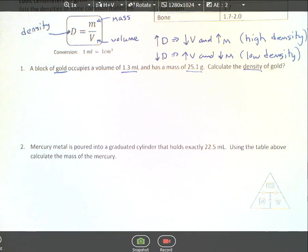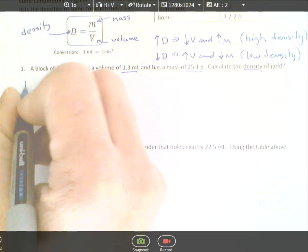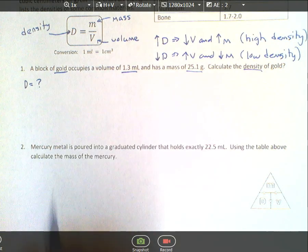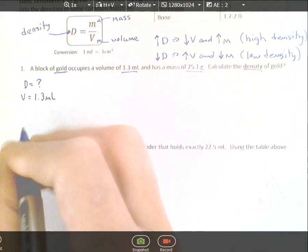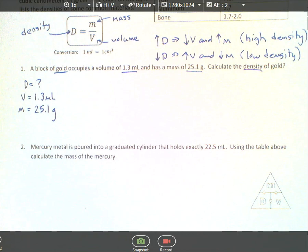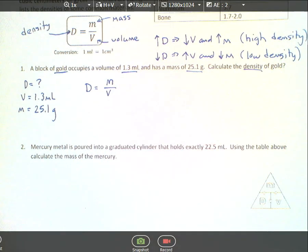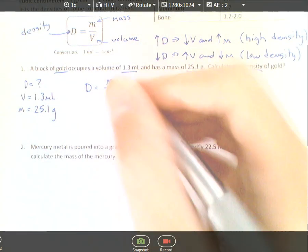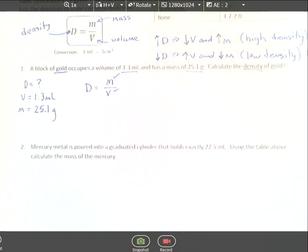Write out the density formula. You're looking for the density of gold, so we don't know it. The volume is 1.3 milliliters, and the mass is 25.1 grams. Now write the formula: density equals mass over volume. Since we're looking for density and it's already isolated, we already know the mass and volume.